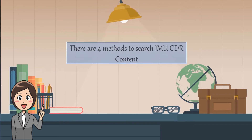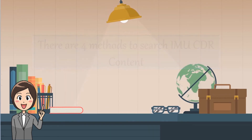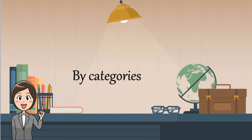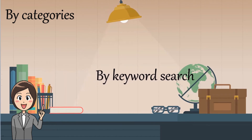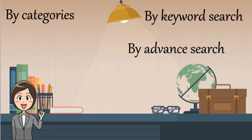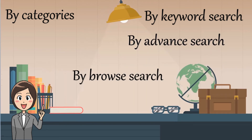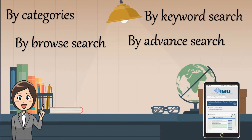There are four methods to search IMU CDR content: by categories, by keyword search, by advanced search, and by browse search. In this video, I will show you how to search CDR content by categories. For further information, you can refer to the CDR manual guide in the library portal.